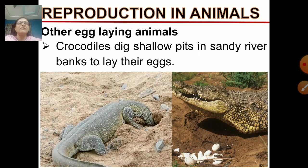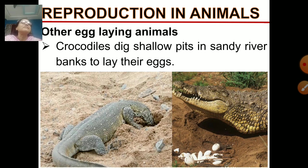Next is the crocodile. How do crocodiles reproduce? Crocodiles also lay eggs to reproduce. Crocodiles dig shallow pits in the sandy river bank to lay their eggs. See here — it is digging a shallow pit, as you can see very well.